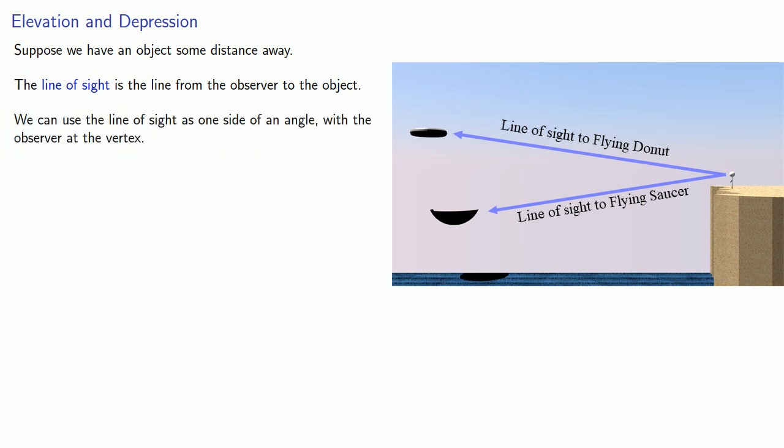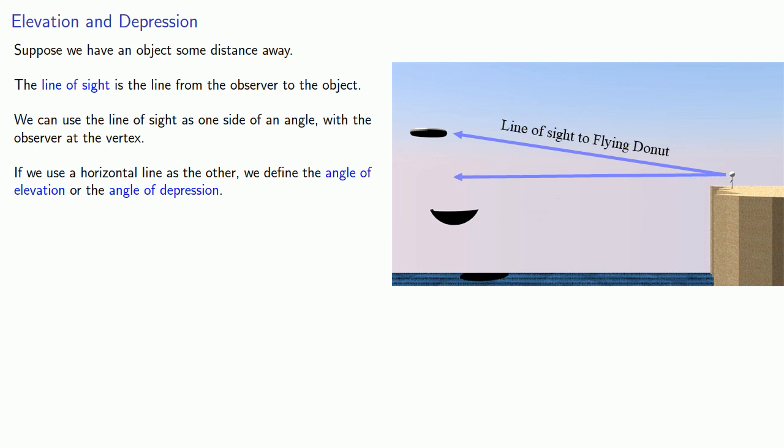Because this is a line, we can use the line of sight as one side of an angle with the observer at the vertex. If we use a horizontal line as the other, we can define the angle of elevation or the angle of depression.